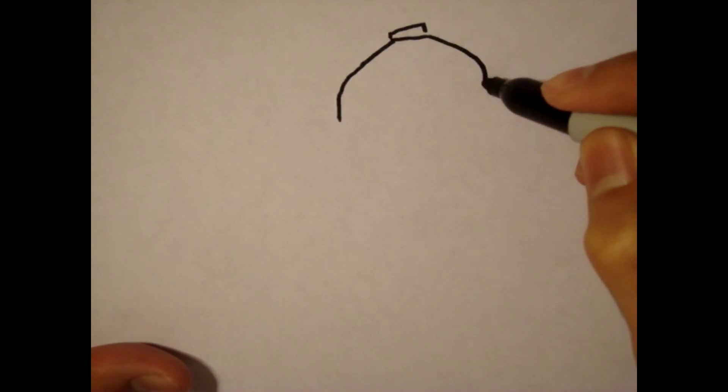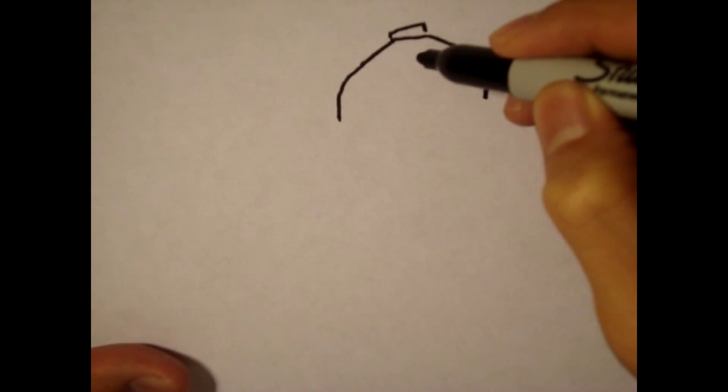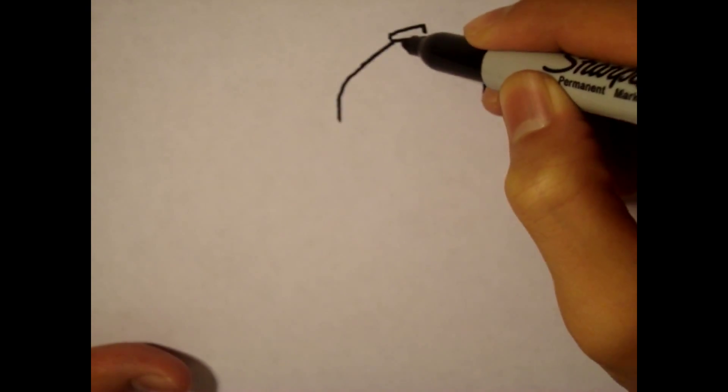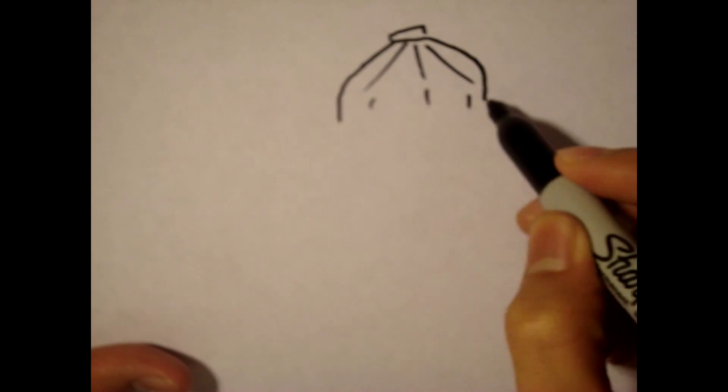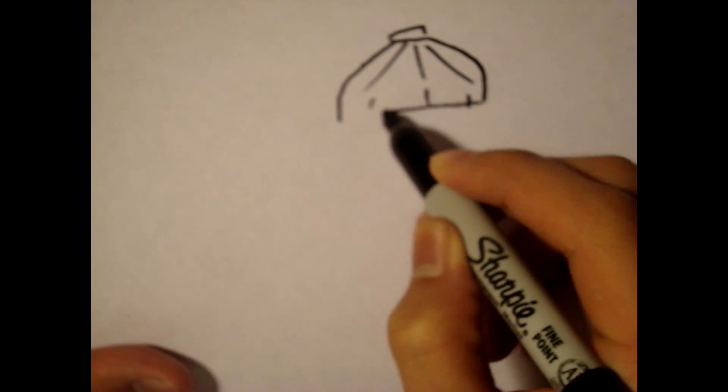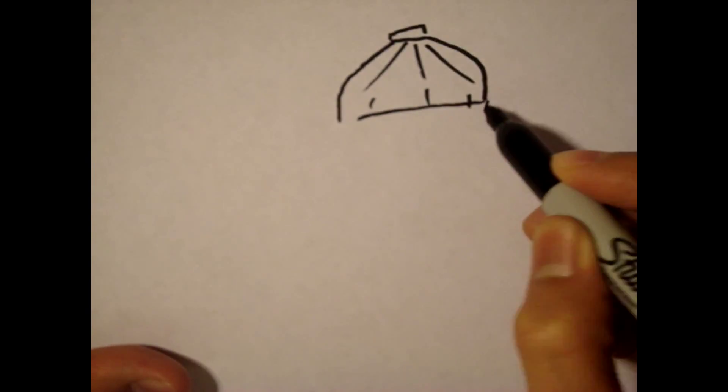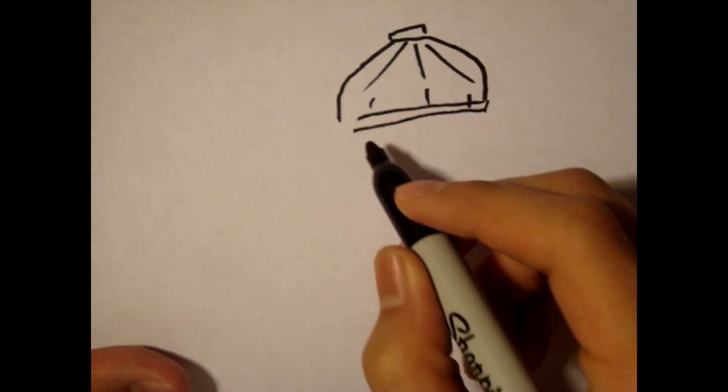We want to draw a line up like this, alright? Then we draw a few lines out to represent the structure, and we're going to draw a line curve over. Then we draw a second one curve over.